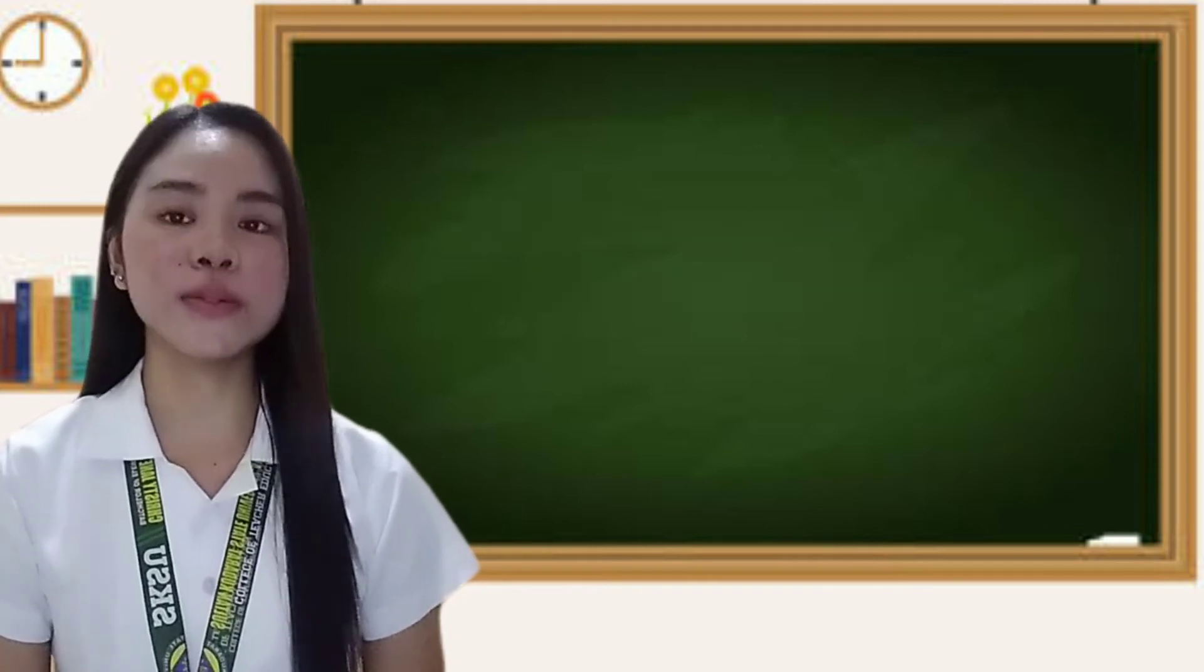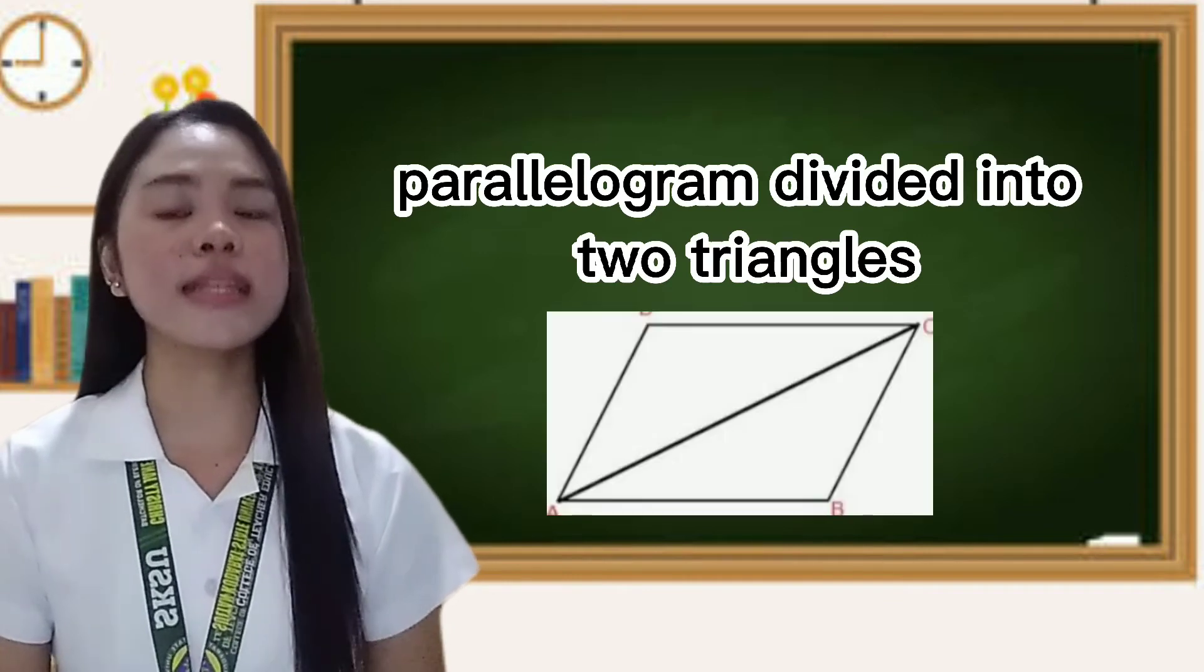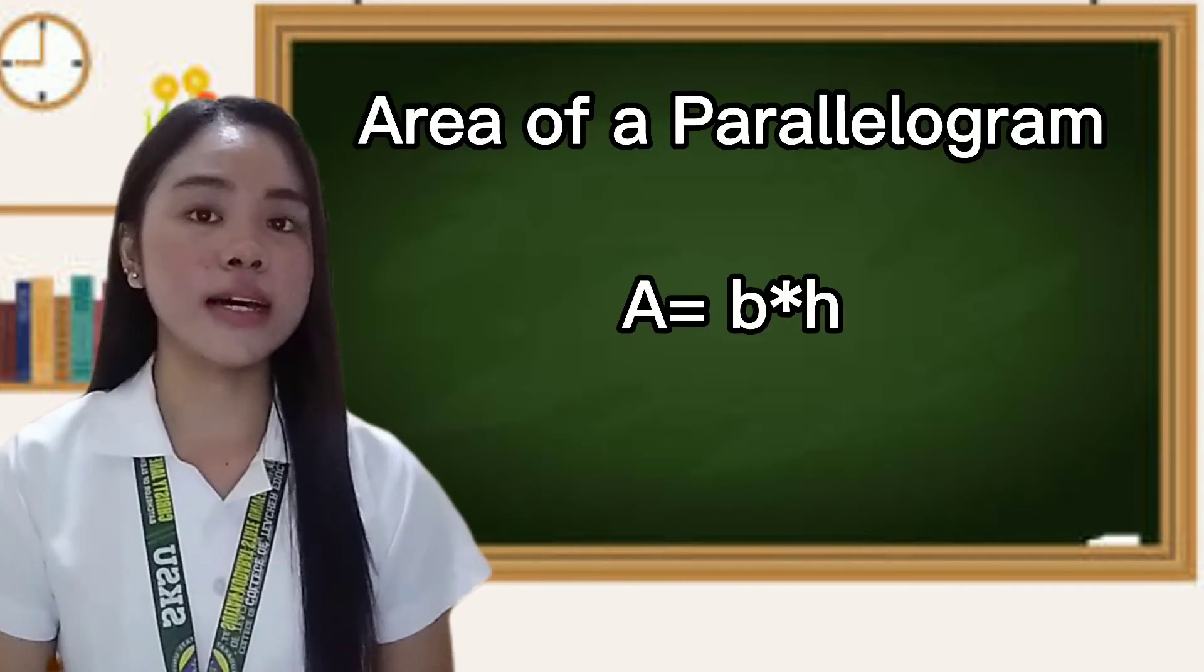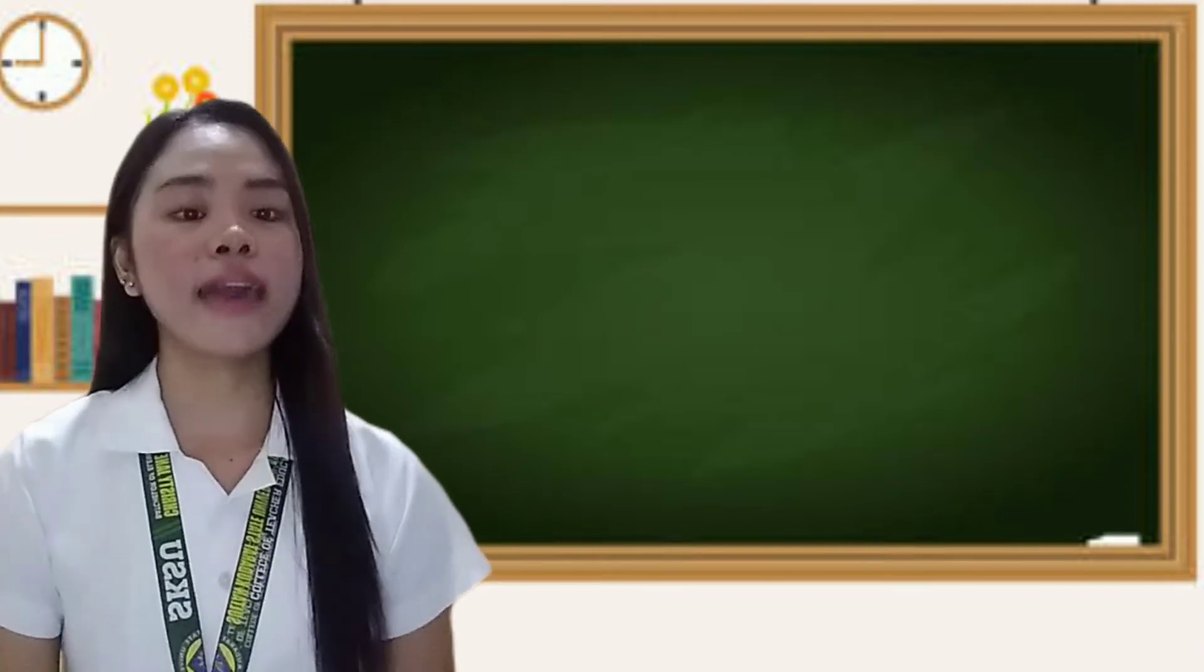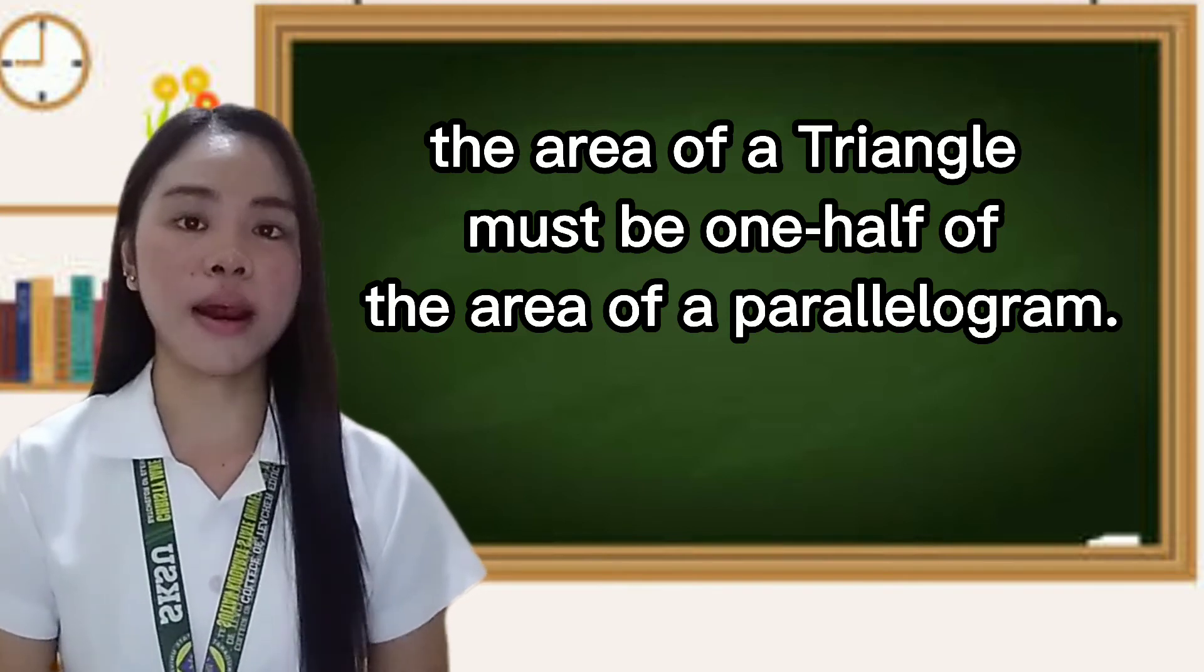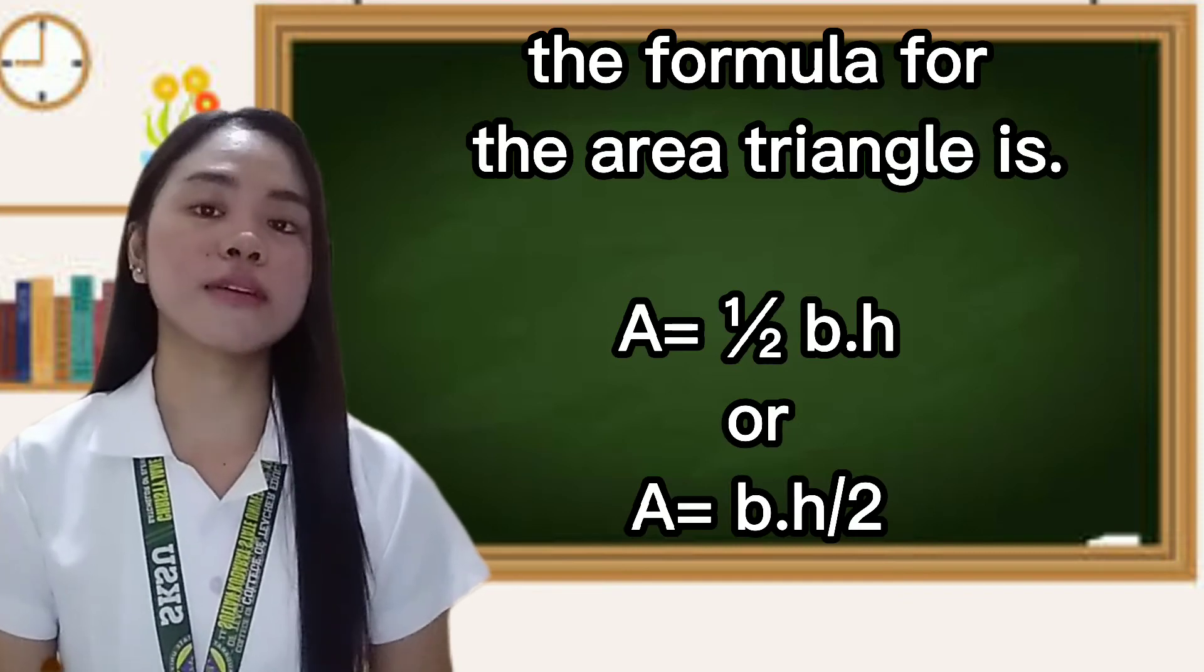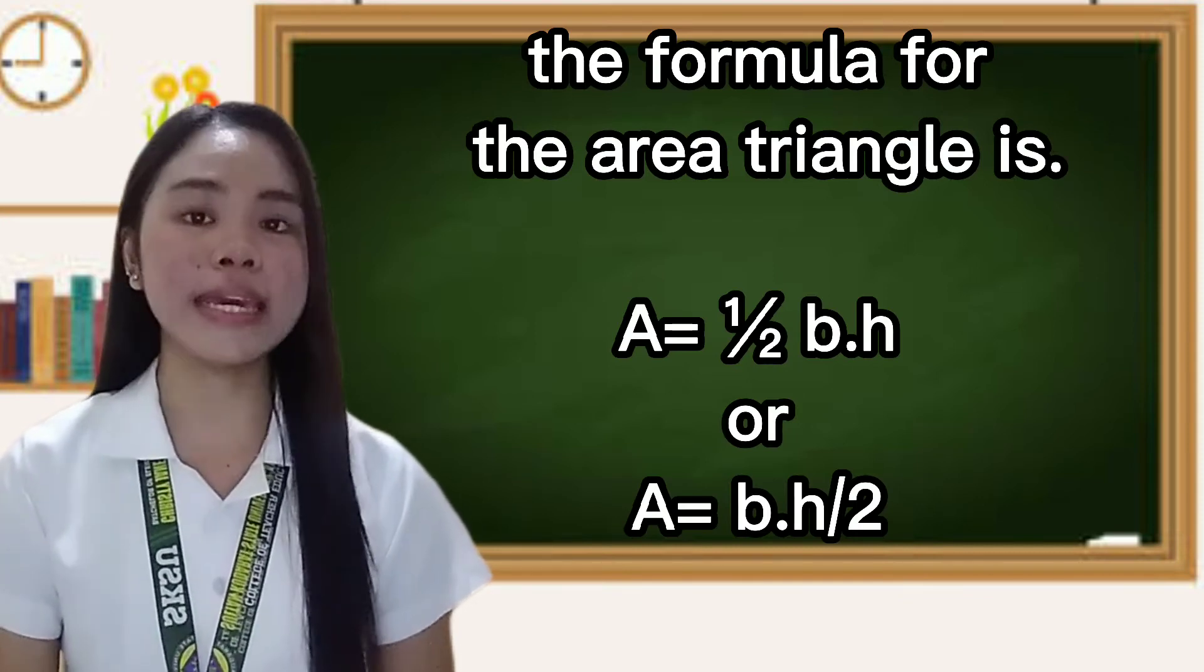The division by two comes from the fact that a parallelogram can be divided into two triangles. Since the area of a parallelogram is A equals B times height, the area of a triangle must be one-half the area of a parallelogram. Thus, the formula for the area of a triangle is A equals one-half B times height.